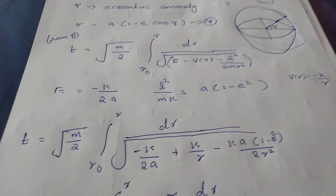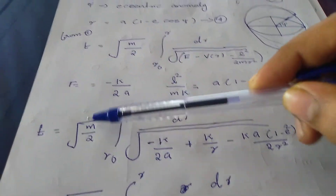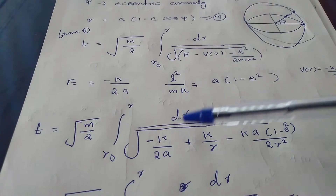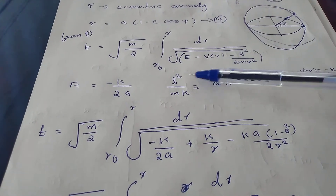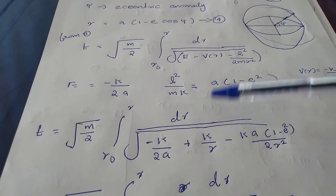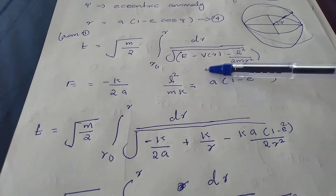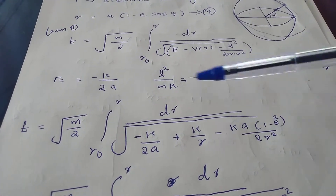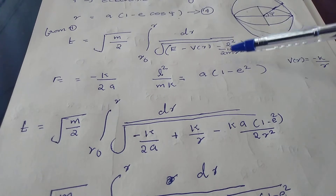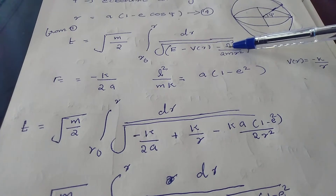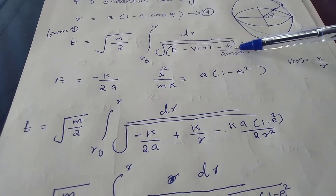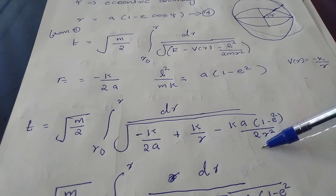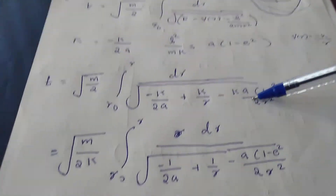We have to simplify: r0 to r, dr divided by square root of [minus k by 2a plus k by r minus a(1 minus e squared) by 2r squared]. We multiply and divide by r inside. Then R is common in the numerator, and we simplify the expression with r squared by r and minus r squared by 2a, with a(1 minus e squared) by 2 terms.